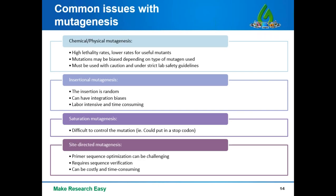For insertional mutagenesis, while cost-effective, there are also disadvantages. First, the insertion can be at a random location, and sometimes this isn't ideal if you'd like to control where your mutation is inserted. There can also be integration biases — a preference for gene insertion at a specific locus — which depending on the scope of your experiments you might want to avoid. Finally, while inexpensive, it is labor-intensive and time-consuming, which is something else to consider.